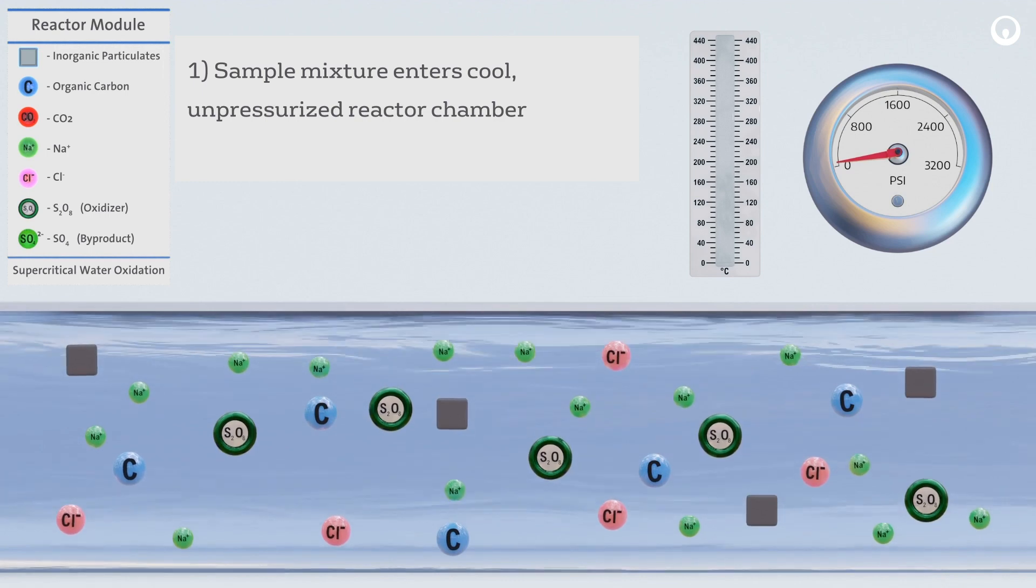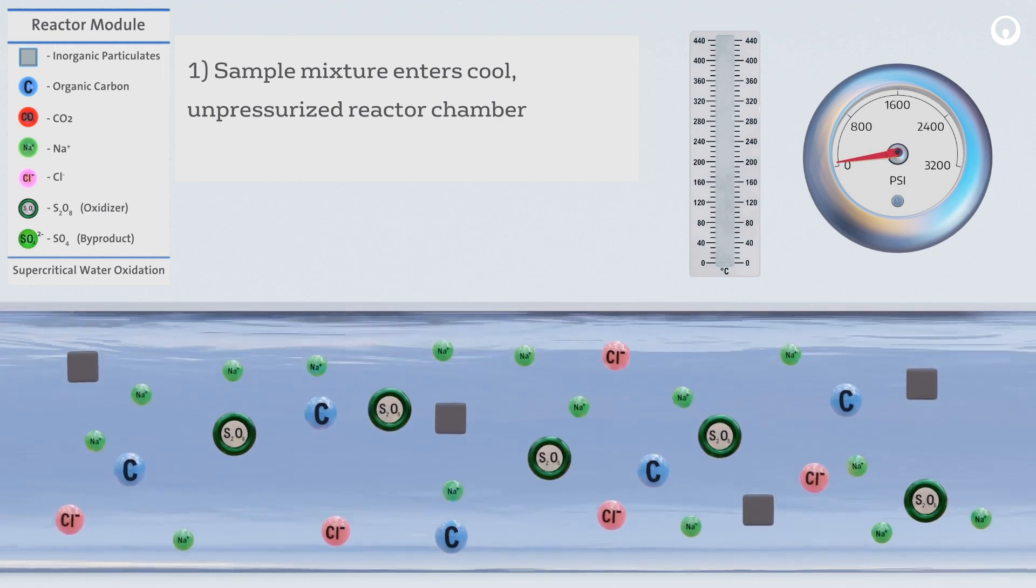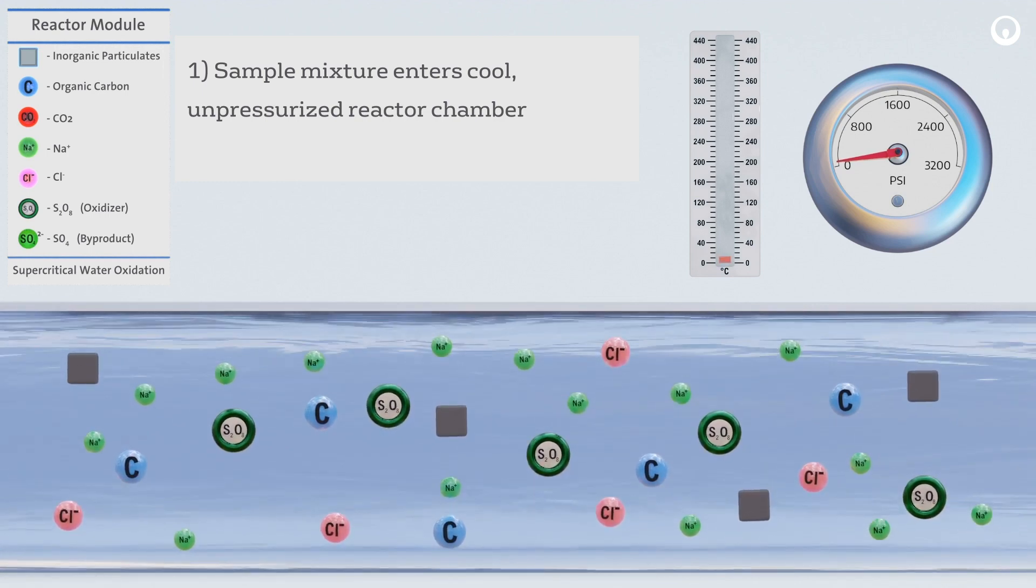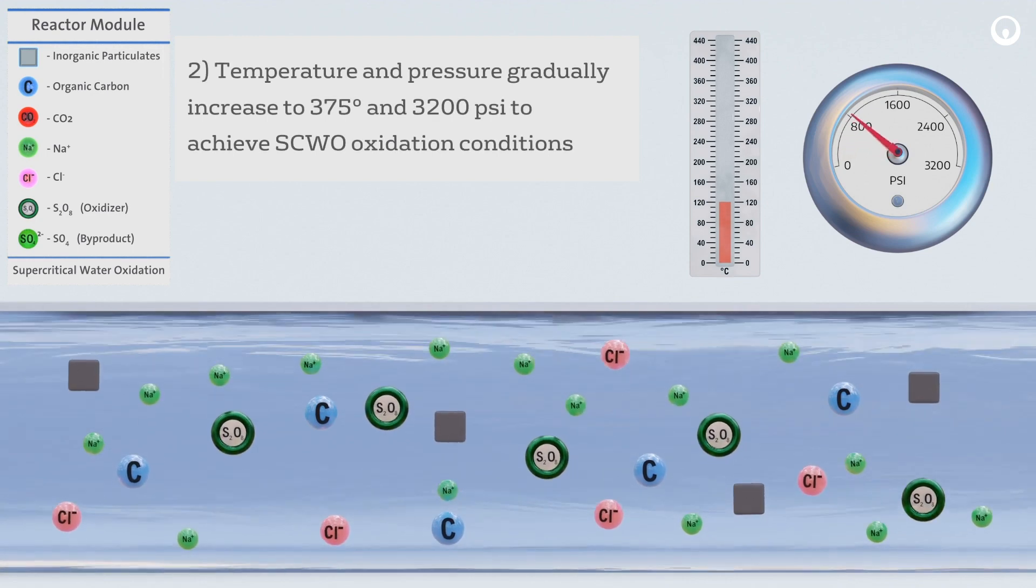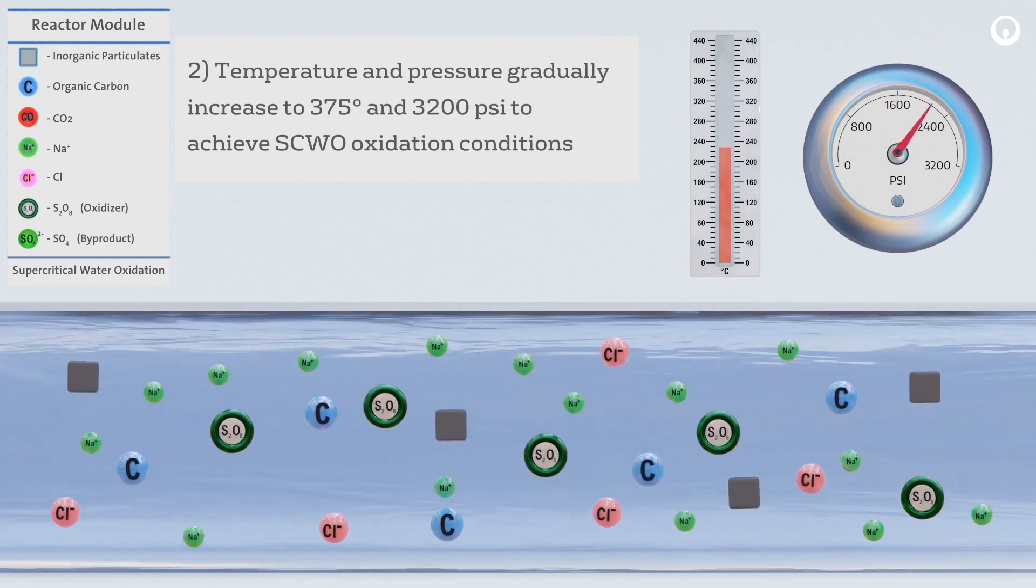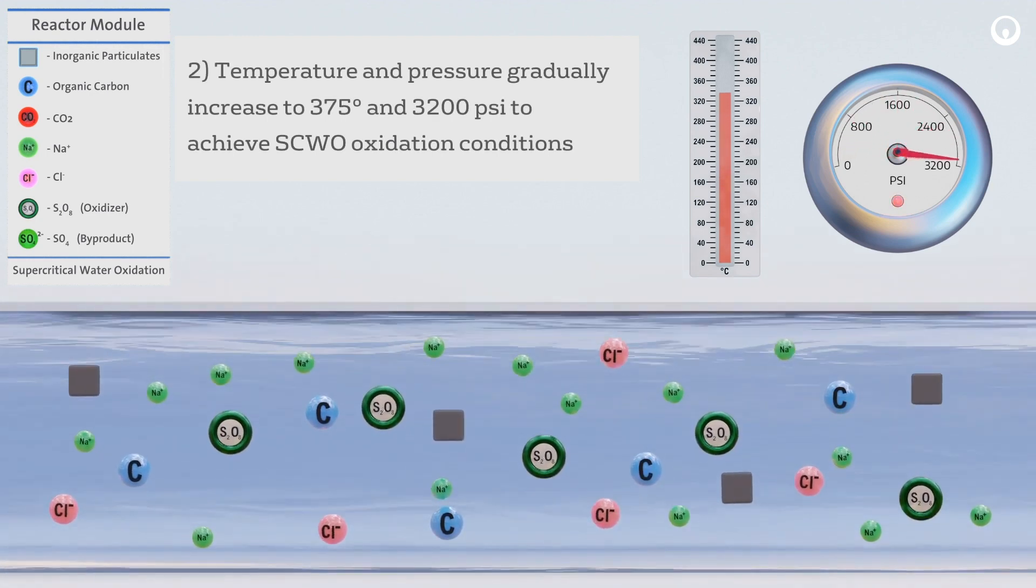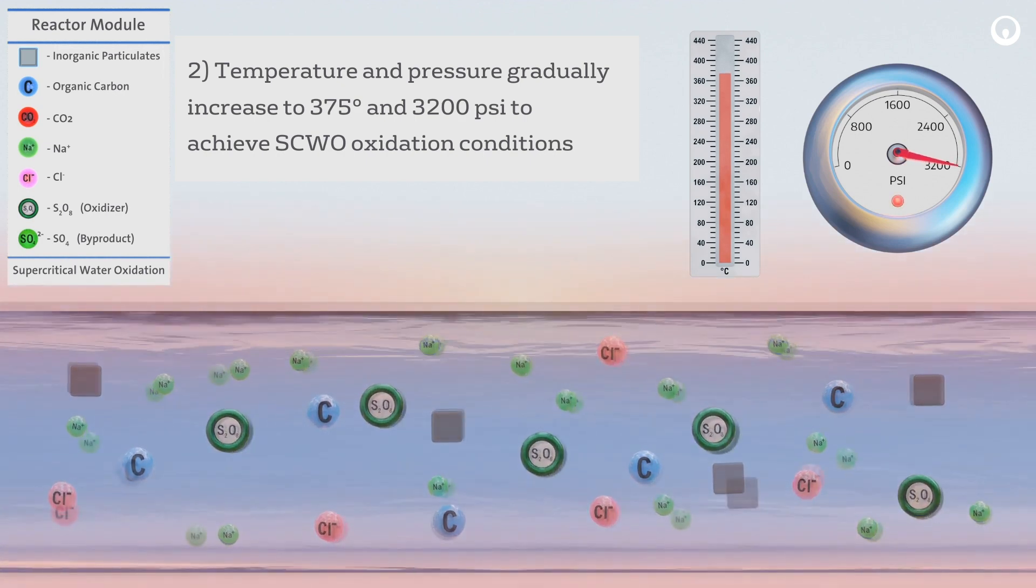It is then brought to its supercritical state by heating the sealed reactor to 375 Celsius. This increases the pressure inside the reactor to 3200 PSI due to the expansion of liquid when entering the gaseous phase.